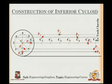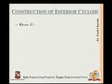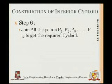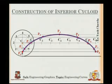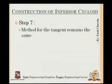For this inferior cycloid, point P never touches the directing line — neither the initial point nor the final point touches it. This is the key difference between the three types of cycloid curves. Now, joining all these points with a smooth curve gives us the inferior cycloid.